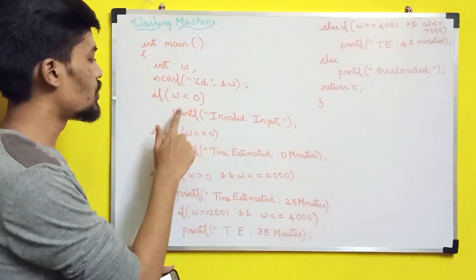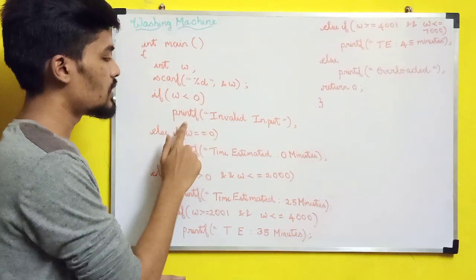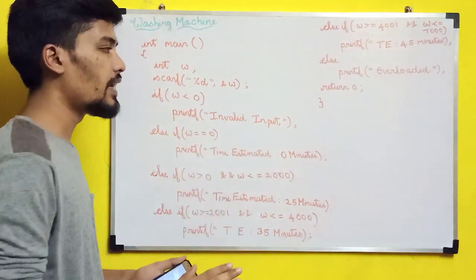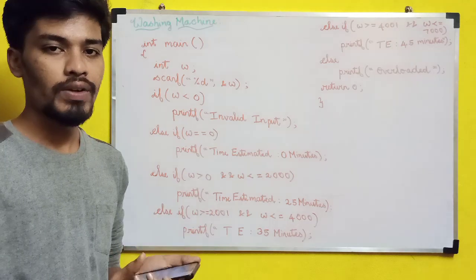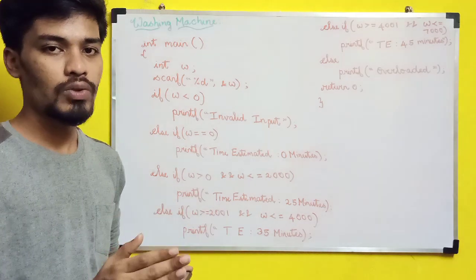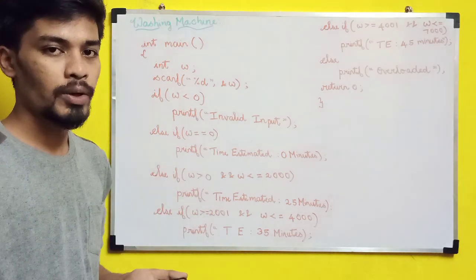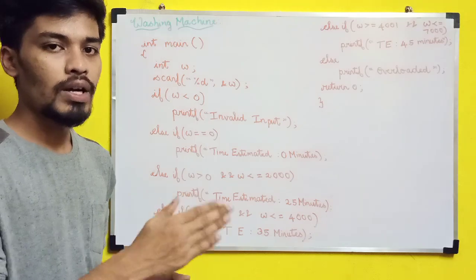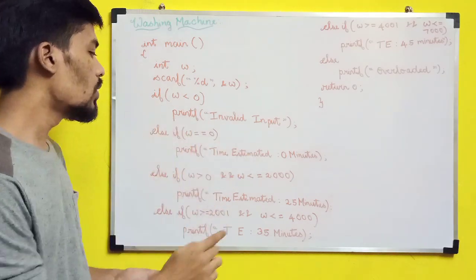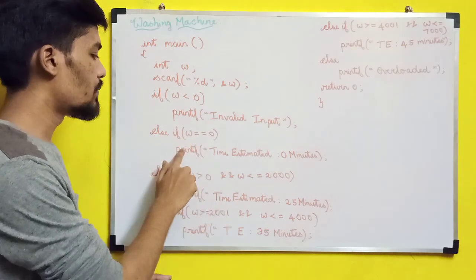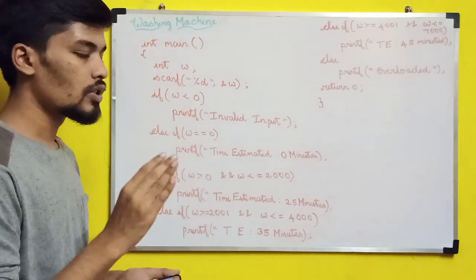If w is less than 0 then we print 'invalid input'. So when we put the range from 0 to 7000, if we input 0 as a condition we will print invalid. So else if we check w equal to 0.